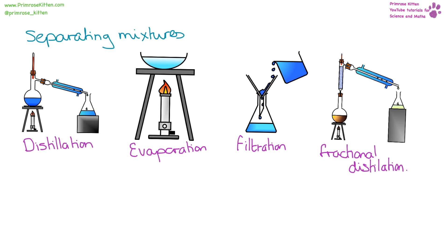When you have mixtures and want to separate them, there are a number of different things you can do. Distillation separates things by boiling point, so things with different boiling points distill at different temperatures. Evaporation removes the liquid and leaves dissolved solids behind in the dish. Filtration is used when you have large particles of solid in a liquid — the solid stays in the filter paper and the liquid drips through. Fractional distillation allows you to take things off at different boiling points.